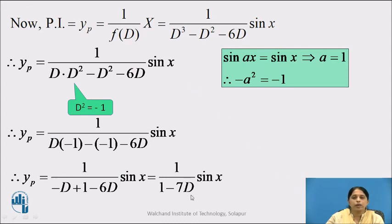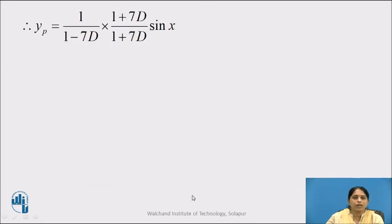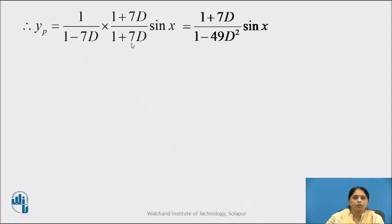To apply the sin x rule, the denominator must contain D², so we rationalize. yp = [1/(1 − 7D)] · [(1 + 7D)/(1 + 7D)] · sin x. The denominator becomes (1)² − (7D)² = 1 − 49D², so yp = (1 + 7D)/(1 − 49D²) · sin x. Now the denominator contains D² and we can apply the shortcut.